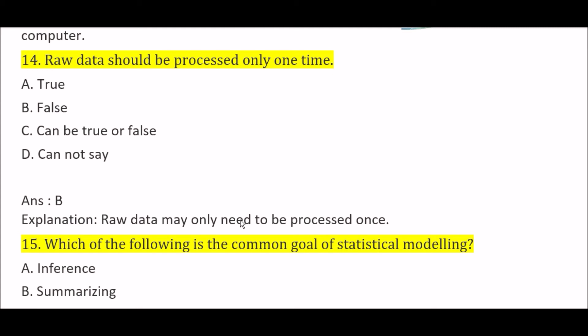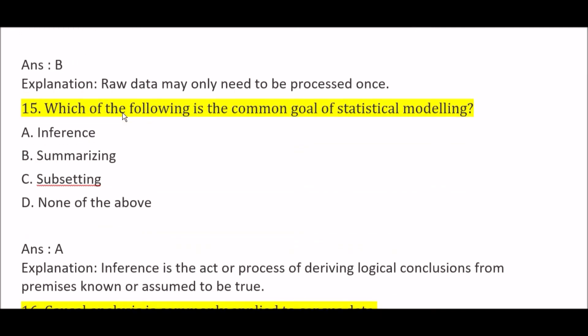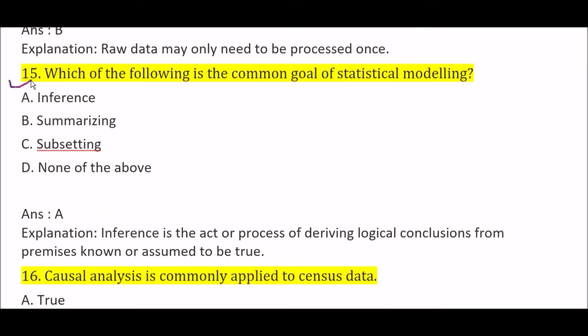Raw data should be processed only one time — Option A: true, Option B: false, Option C: can be true or false, Option D: can't say. The right answer is Option B, false, because raw data may be processed one time or may be processed more than one time — two to three times — depending on your data. So the statement 'raw data should be processed only one time' is false.